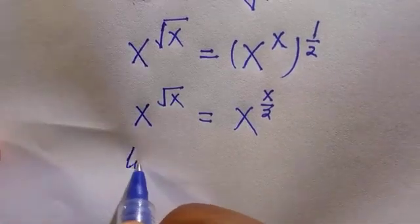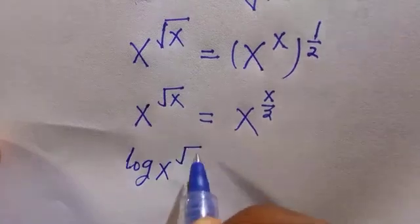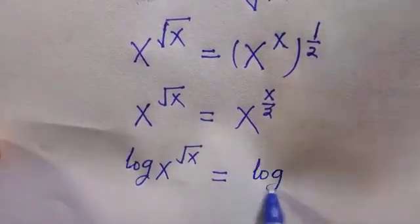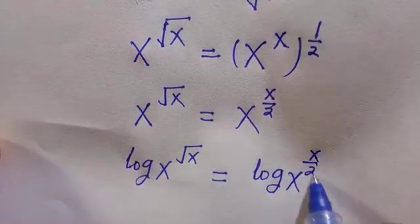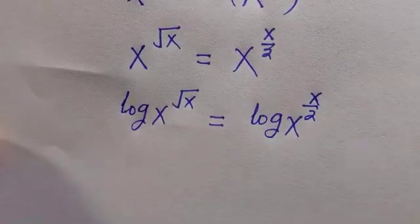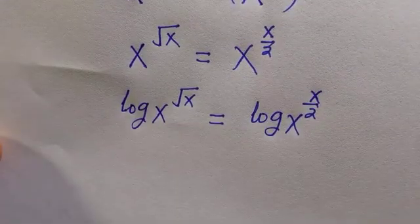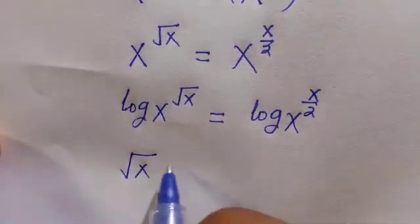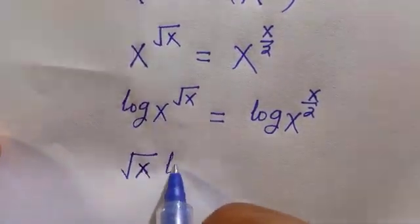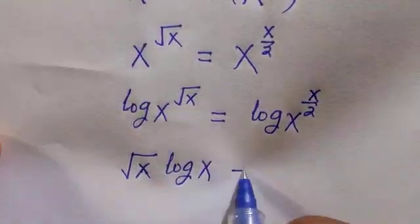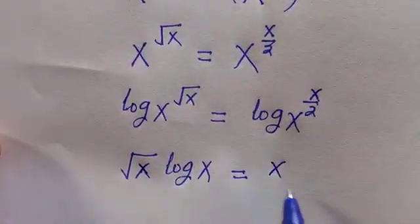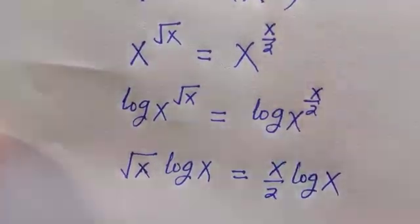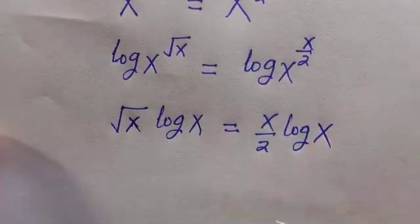Now we're going to introduce logarithm to this. So we have log x raised to power root x equals log x raised to power of x divided by 2. Then we're applying the law of logarithm, that is we take the power down. So here we have root x log x equals x divided by 2 log x.